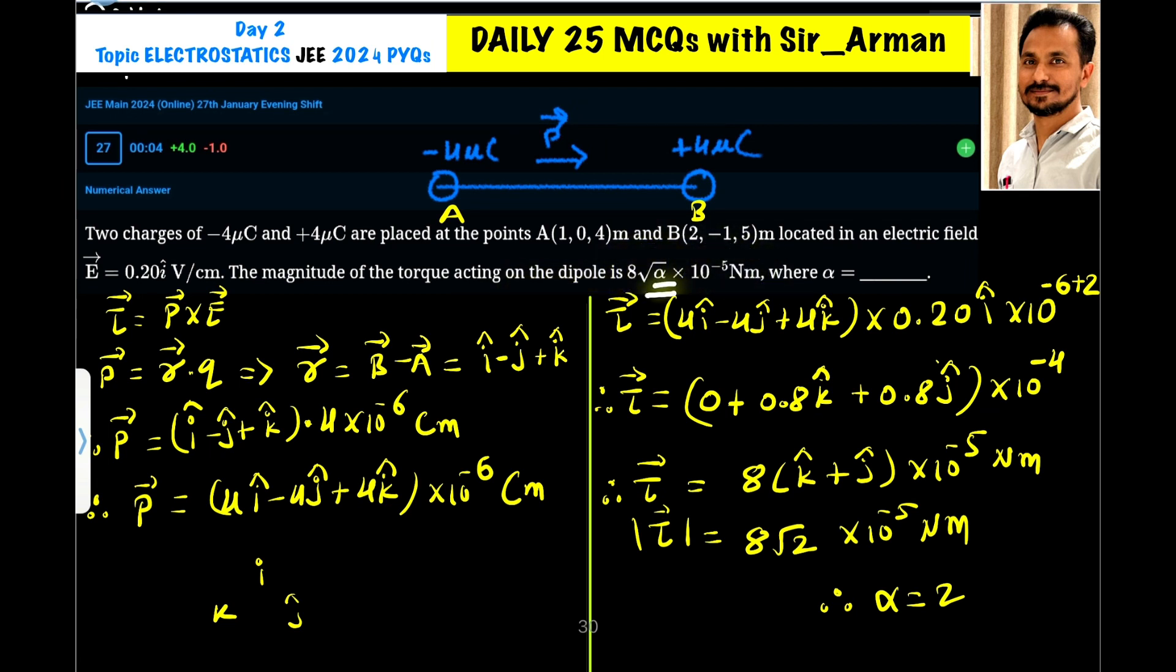Now to find the torque, we know that torque equals P cross E. E is given, we have to find the dipole moment. Now dipole moment is a vector quantity which is given by the separation between the charges into the magnitude of one of the charges.